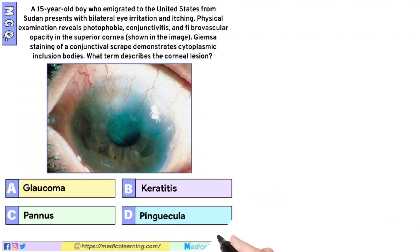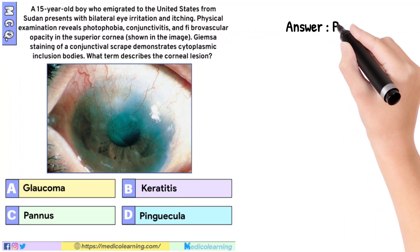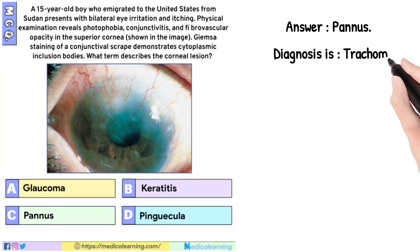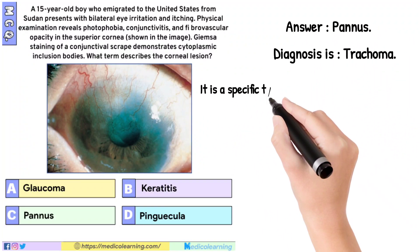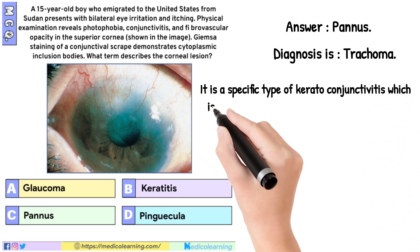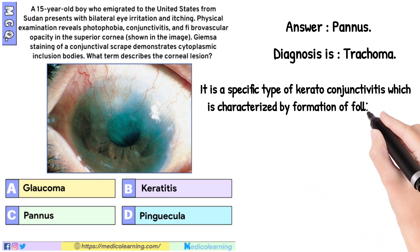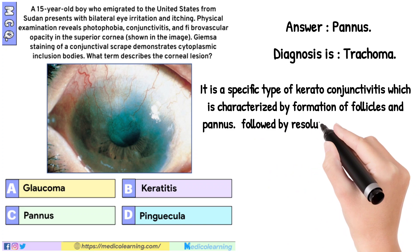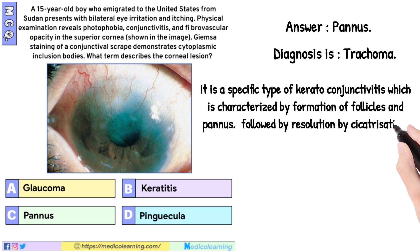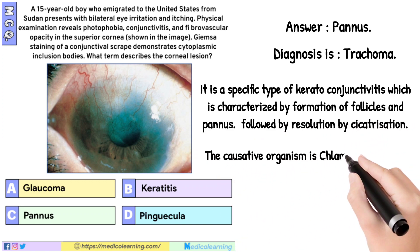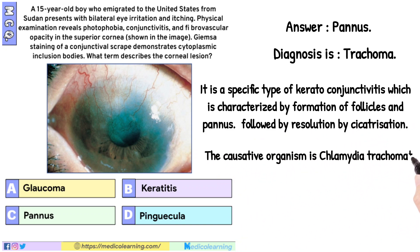In this question, the answer is Pannus — diagnosis is Trachoma. It is a specific type of keratoconjunctivitis which is characterized by formation of follicles and pannus, followed by resolution by cicatrization. The causative organism is Chlamydia trachomatis.